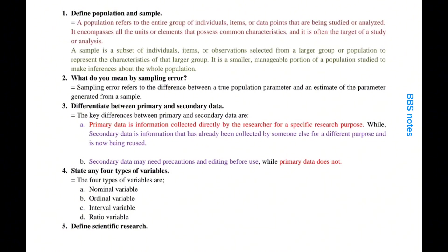State any four types of variables. The four types of variables are: A. Nominal variable, B. Ordinal variable, C. Interval variable, D. Ratio variable.